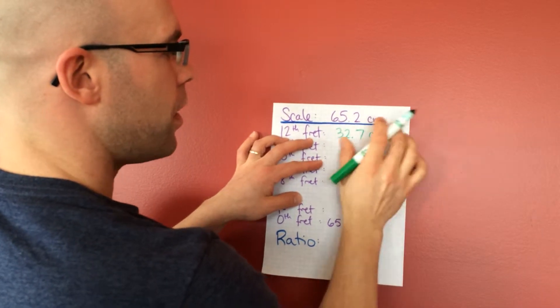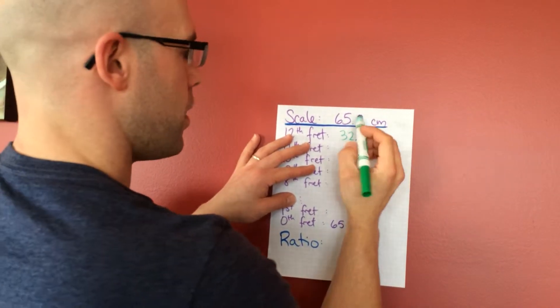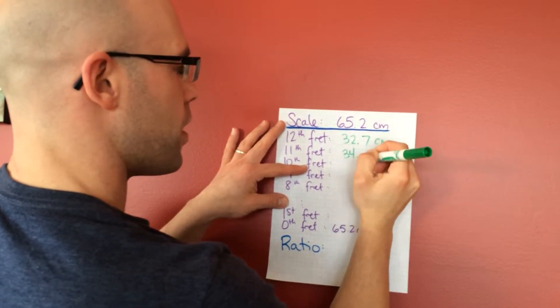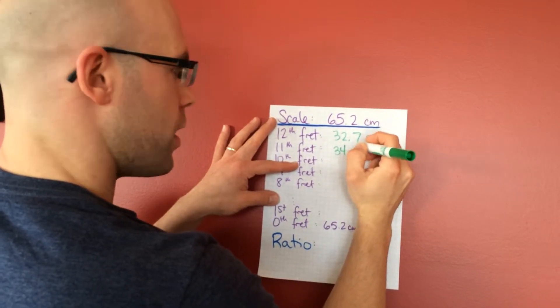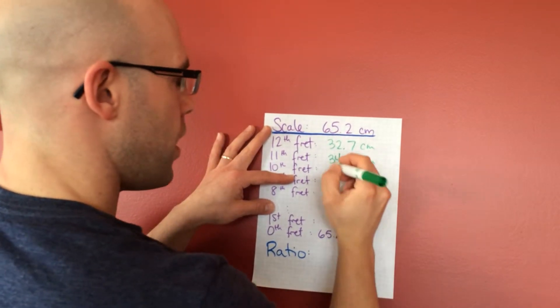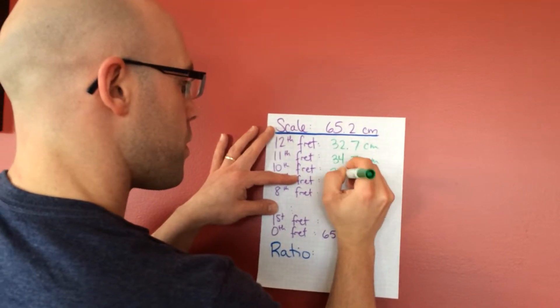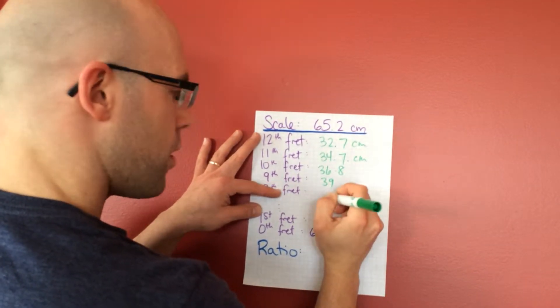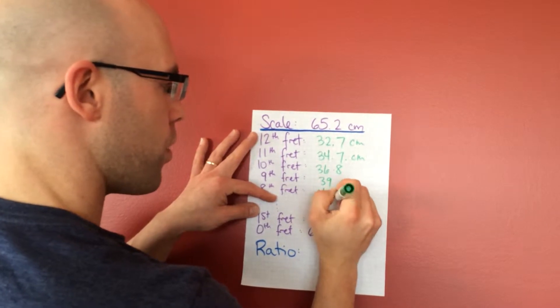Now, that should be about half, and I'm a little bit off in my measurements, but it's pretty close. We're going to keep going here. The 11th fret is a little bit higher up, and so it's 34.7 centimeters. The 10th fret is 36.8 centimeters. The 9th is 39 centimeters. And then the 8th is 41.3.